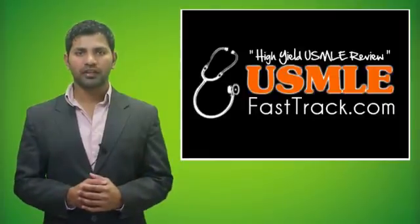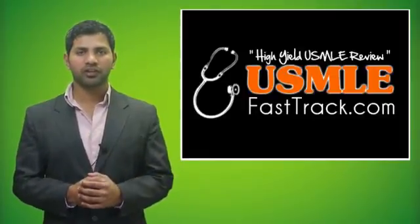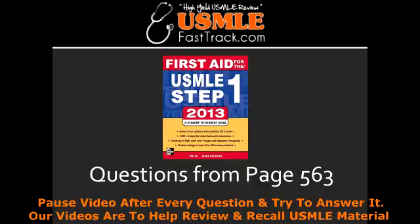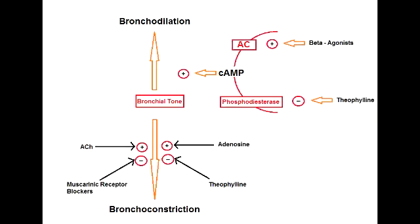Welcome to USMLEFastTrack.com. The section we're going to talk about today is from First Aid for the USMLE Step 1, 2013 edition, page 563. Name the muscarinic antagonist used in the treatment of asthma. The muscarinic antagonists used in the treatment of asthma include ipratropium and tiotropium.